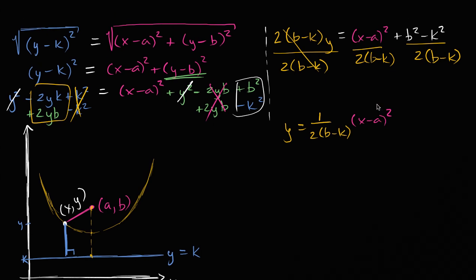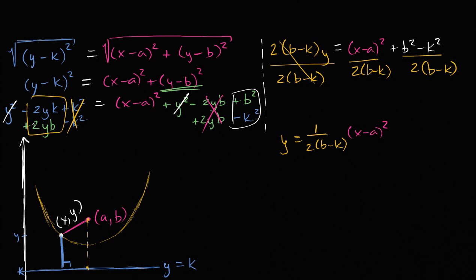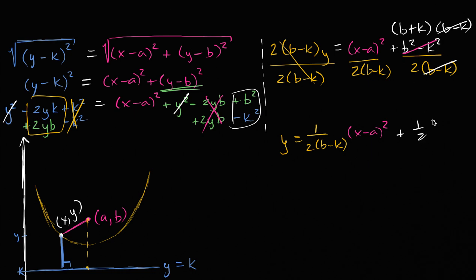Now notice that b² minus k² is a difference of squares, which factors as (b plus k)(b minus k). The (b minus k) factors cancel, leaving just one-half times (b plus k). So the full equation of the parabola is: y equals one over 2(b minus k) times (x minus a) squared, plus one-half times (b plus k).